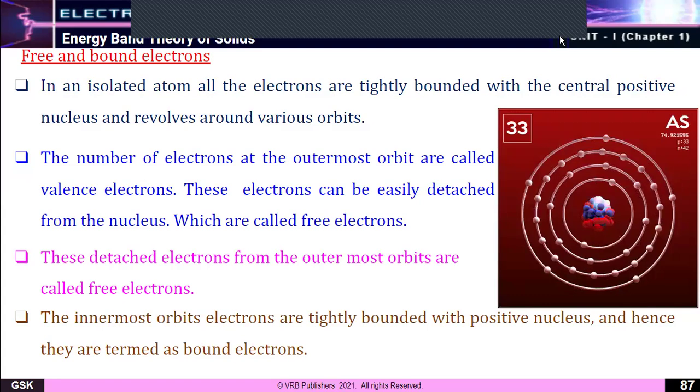Before that, we need to understand the concept of energy bands. What do you mean by energy band? Energy bands are ranges of energy where electrons can exist in a solid. Each band is characterized by a specific energy range and a specific set of quantum numbers.